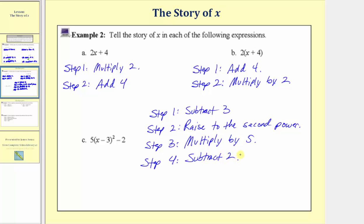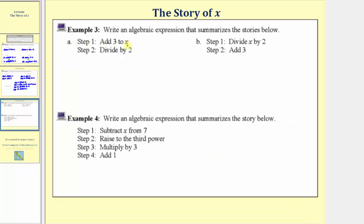Now let's look at three examples where we're given the steps and need to write the expression. For part a, step one is to add three to x, and step two is to divide by two. Adding three to x gives us x plus three. Then we take the result and divide by two, giving us the quantity x plus three, divided by two. It would also be correct to write x plus three in parentheses, then divided by two. These two expressions are equivalent.